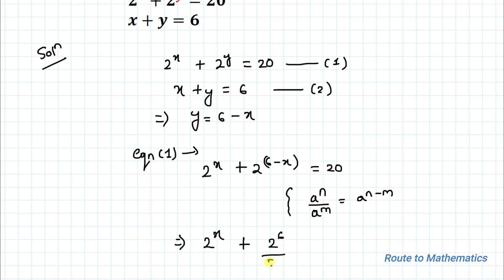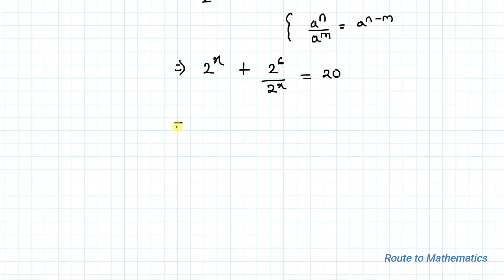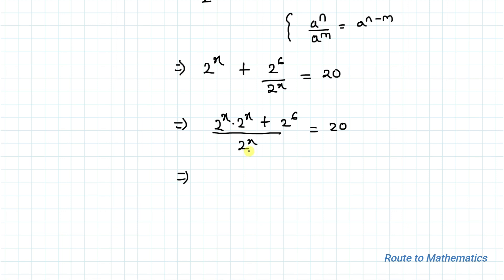So we have: 2 to the power x plus 2 to the power 6 divided by 2 to the power x equals 20. Taking LCM with 2 to the power x in the denominator and cross-multiplying, this becomes: 2 to the power x multiplied with 2 to the power x, plus 2 to the power 6, equals 20 multiplied by 2 to the power x.